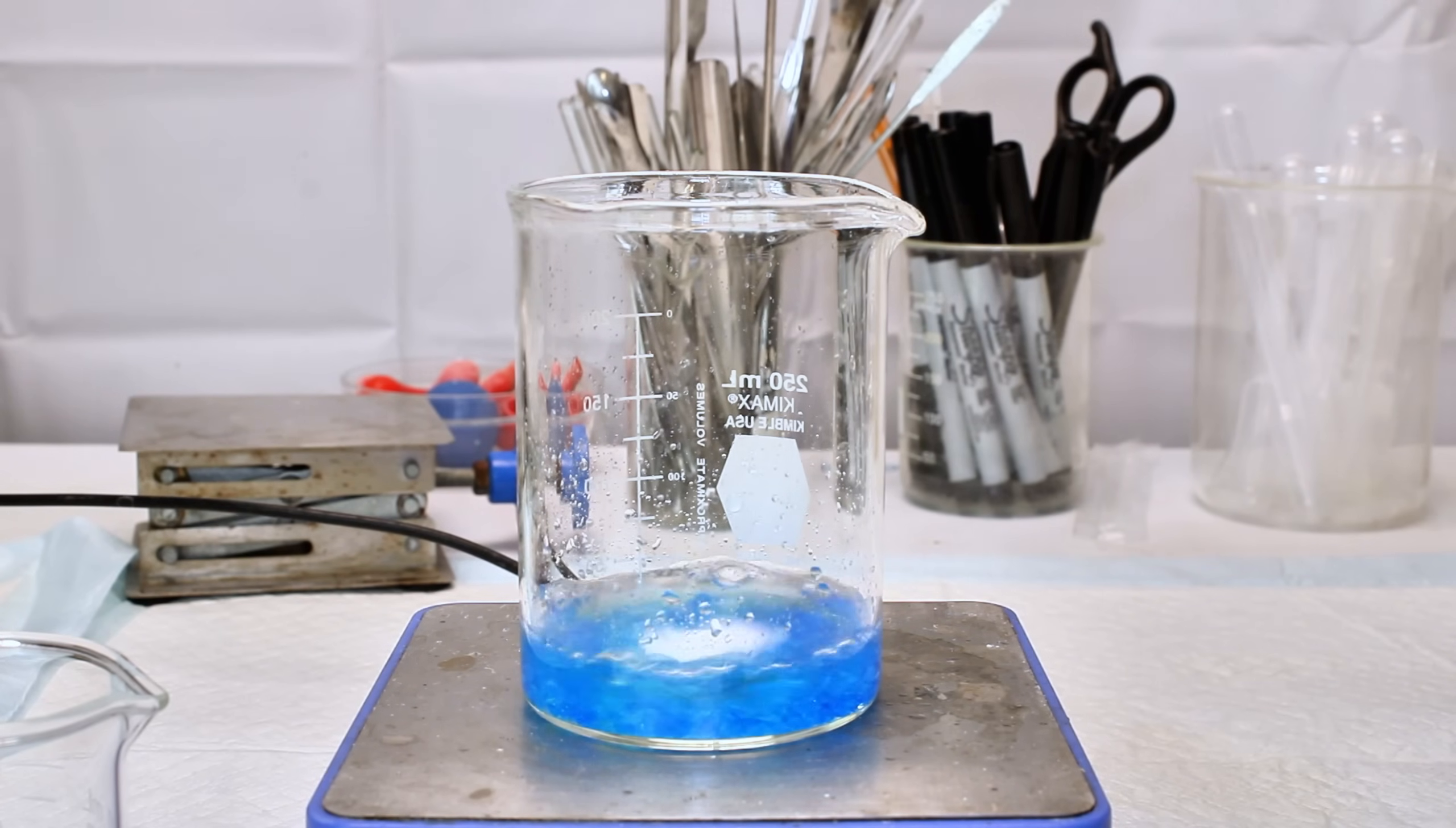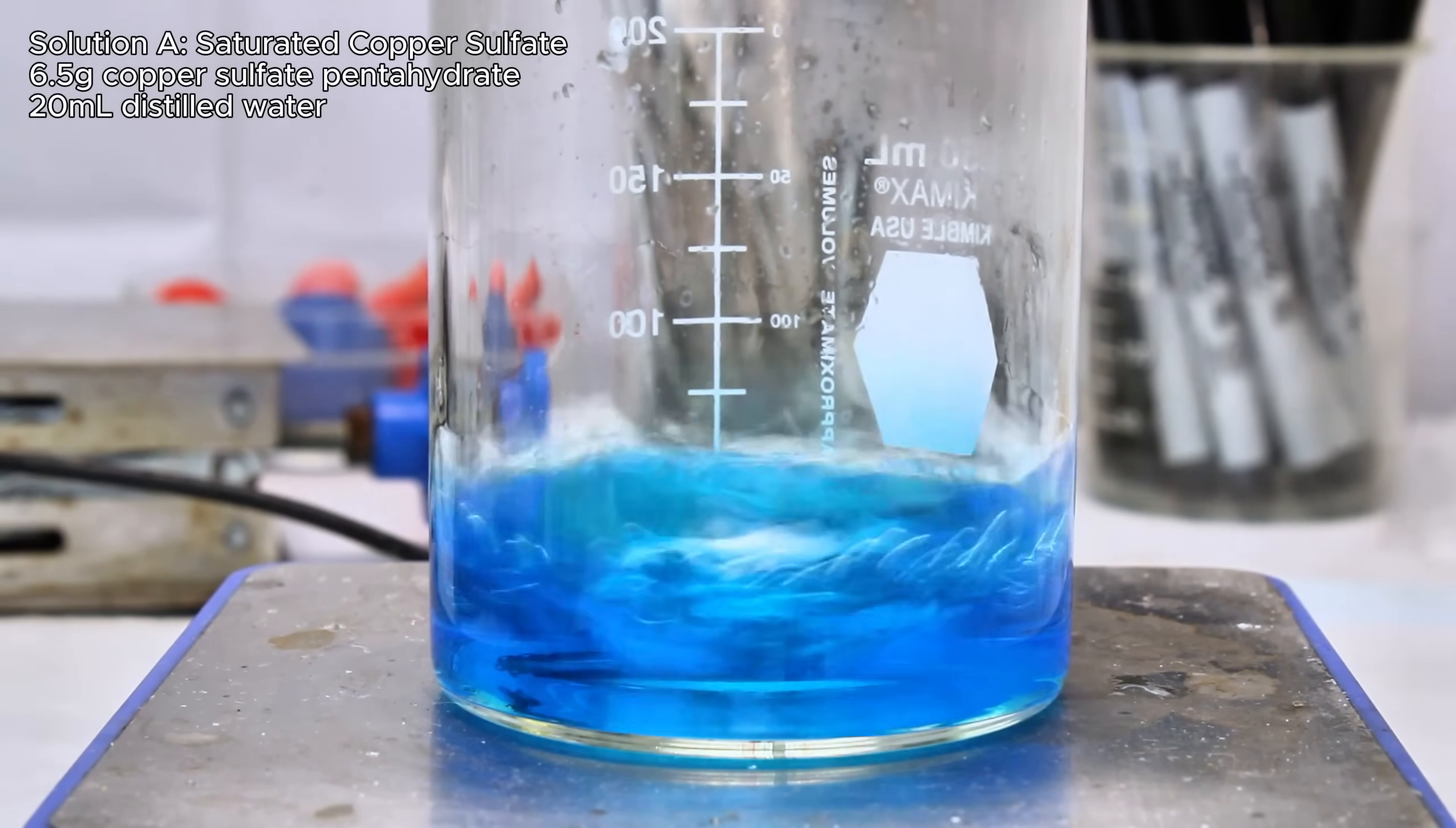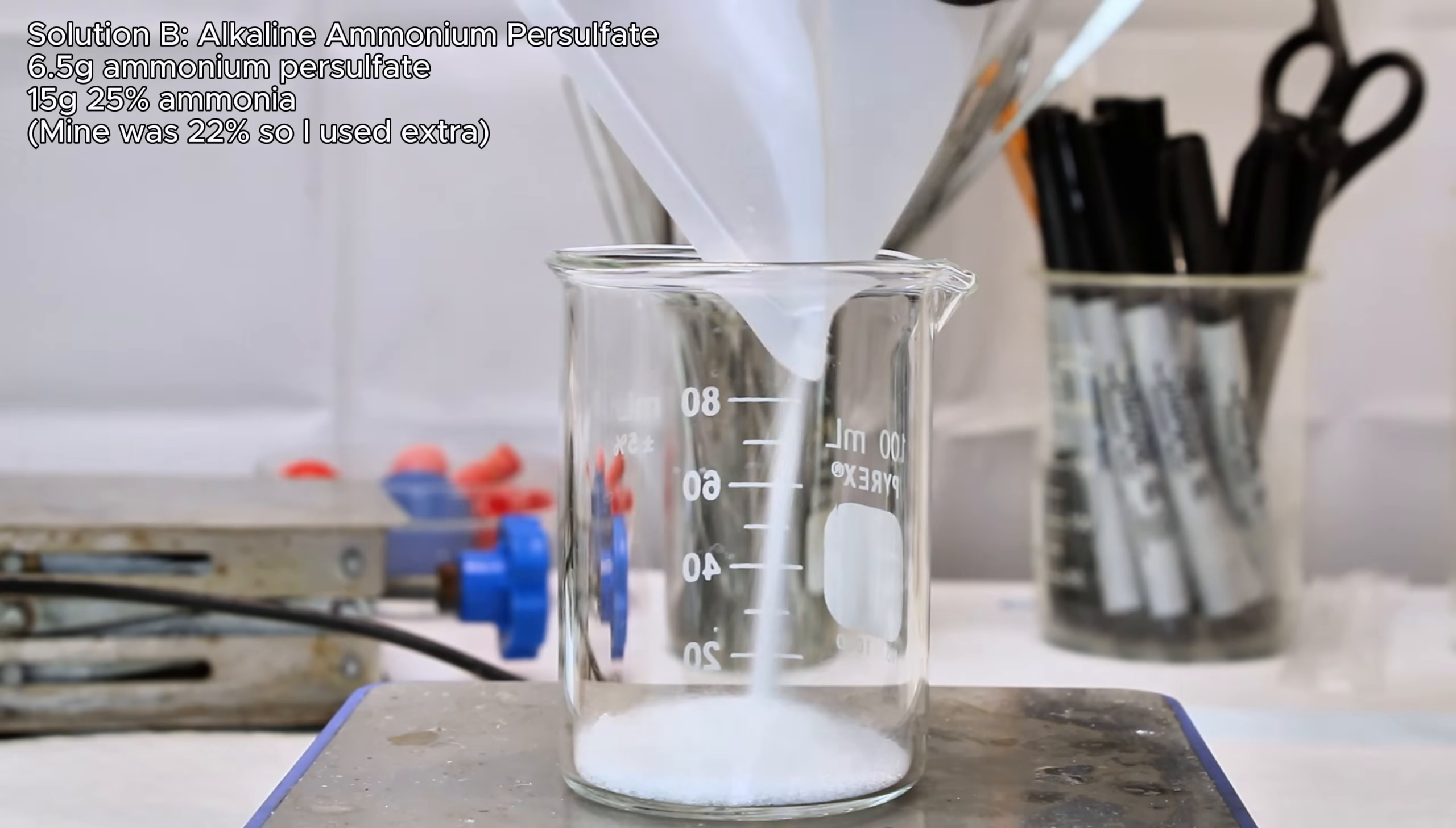Now to get started, I first needed to make two solutions. Solution A is essentially just a saturated solution of copper sulfate, which I made by dissolving 6.5 grams of copper sulfate pentahydrate in 20 grams of distilled water. Once all the copper sulfate had dissolved, I set the beaker aside and began solution B.